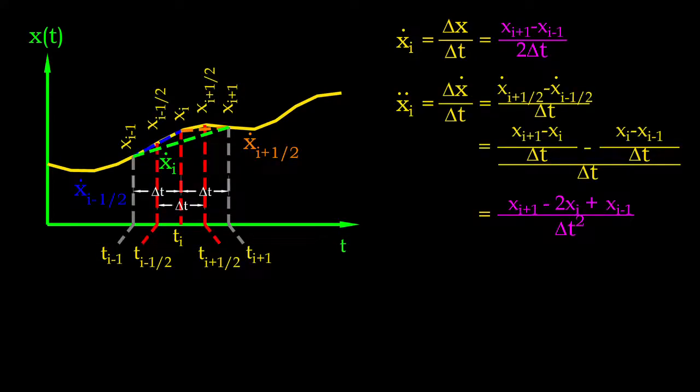How about the acceleration at the same instance? Let's establish two points: one between instance i and i plus 1, and another between i and i minus 1. The acceleration may be calculated using the velocity at these two instances. The velocity of these instances, on the other hand, can be further expressed using the displacement at instance i, i minus 1, and i plus 1. The acceleration can be expressed the same.